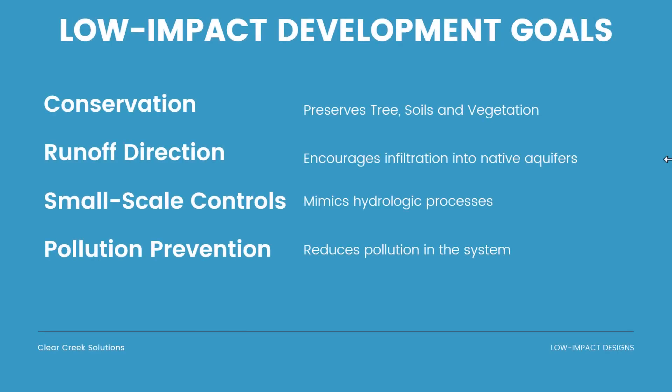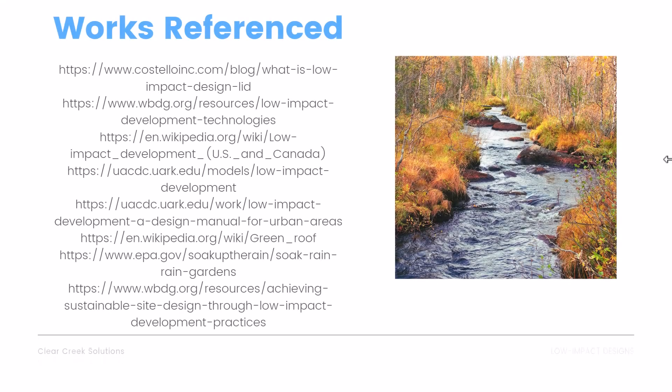For low impact designs, what is the goal? One is conservation — preserve trees, soils, and vegetation. Another is runoff direction, encouraging infiltration into native aquifers as opposed to mitigation facilities. Then there are small-scale controls, which mimic hydrologic processes, and pollution prevention, which reduces pollution in the entire stormwater design system.